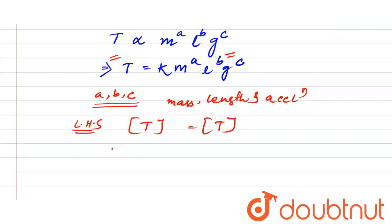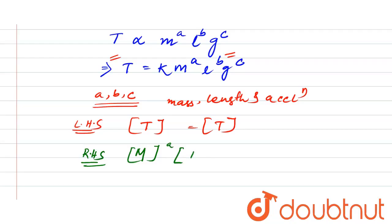On the right-hand side we have k · m^a · l^b · g^c. Since k is a non-dimensional constant, it has no dimension. The dimension of mass is M to the power a, length l to the power b, and acceleration g has dimensional formula L·T^(-2) to the power c.